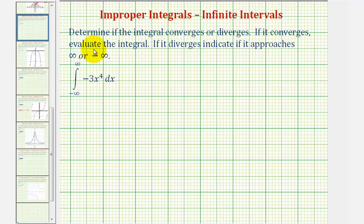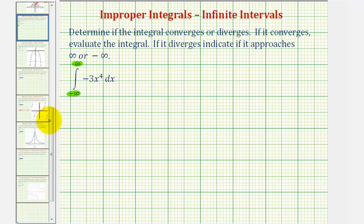Welcome to an example of an improper integral where the interval of integration is an infinite interval. In this case, notice how the lower limit of integration is negative infinity and the upper limit of integration is positive infinity.